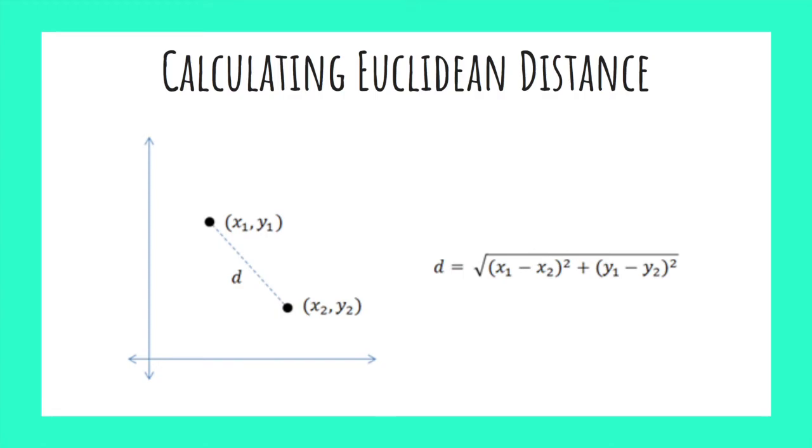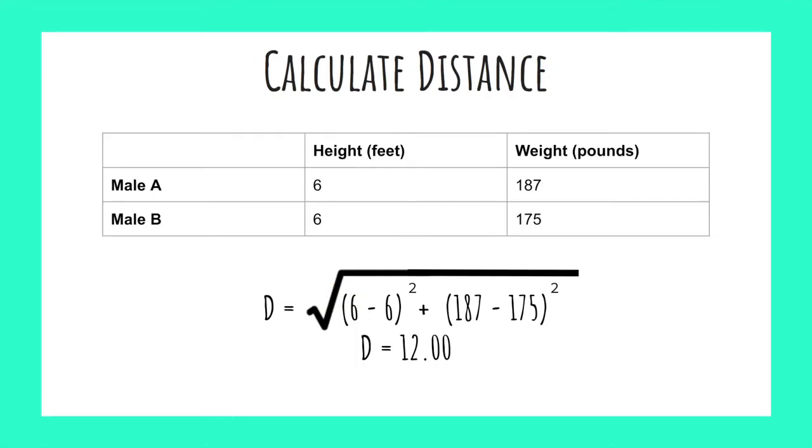Now we can simply plug in our numbers. We subtract the height values and square them, subtract the weight values and square them, then sum up those terms and take the square root. This leaves us with a distance of 12 between person A and person B. Now if we do this for person C and D, we can once again plug in our values and come up with a distance of 10.05.